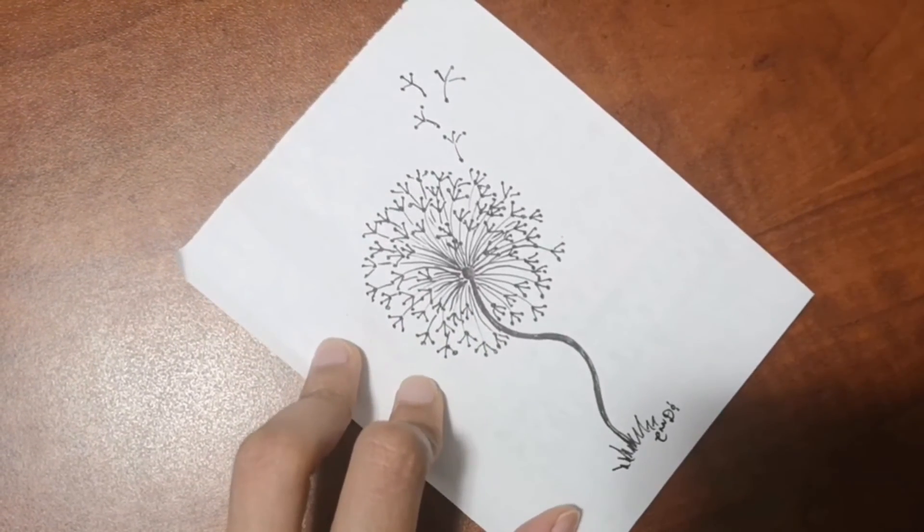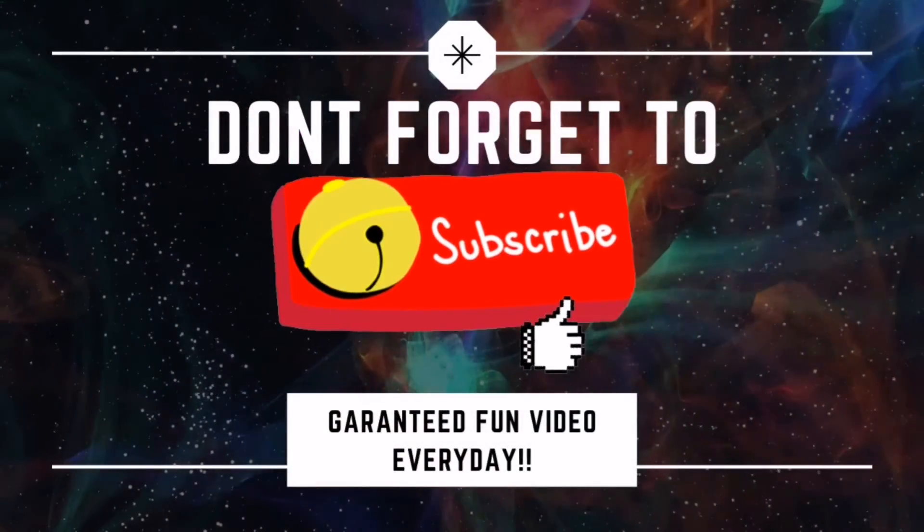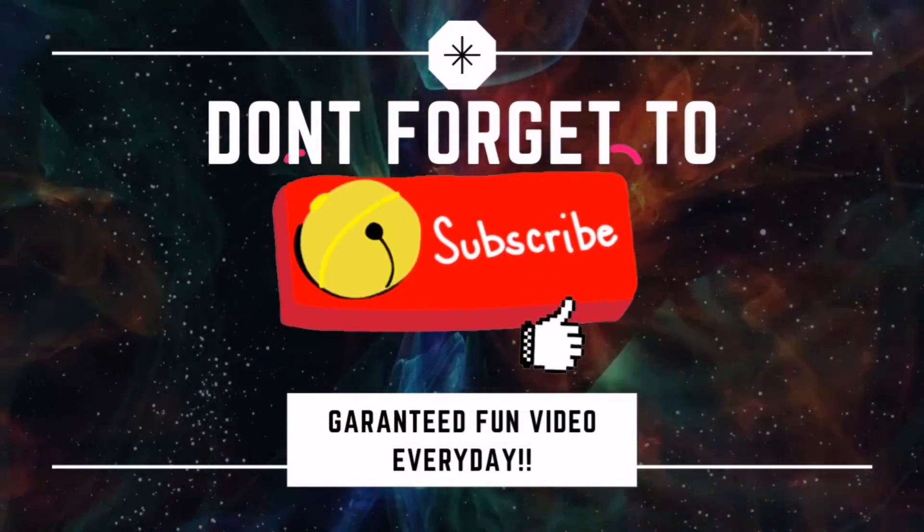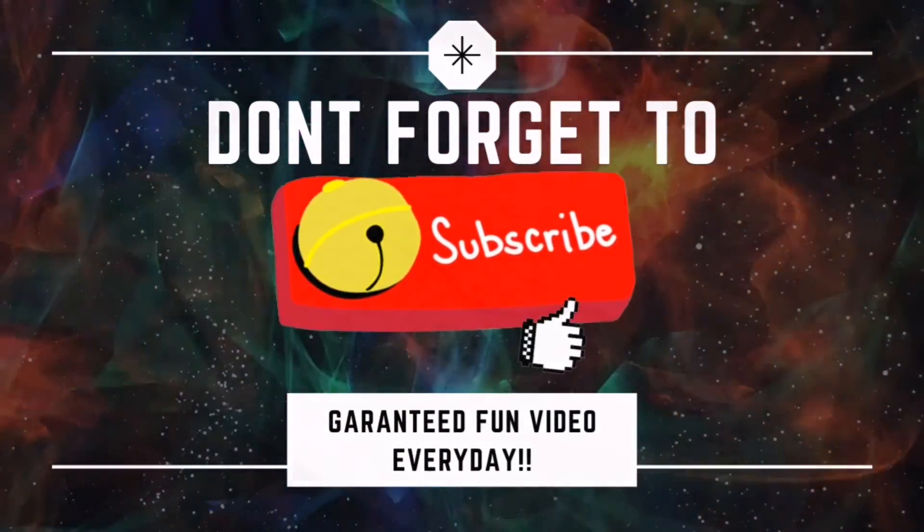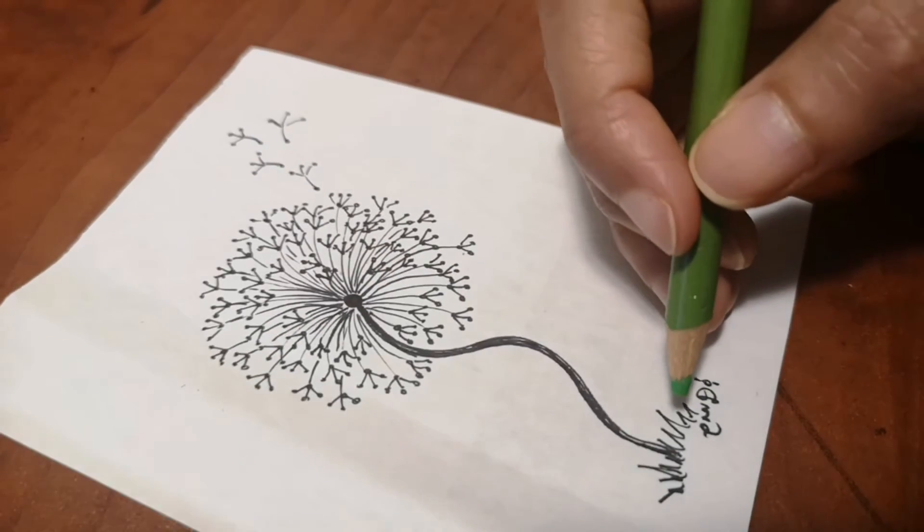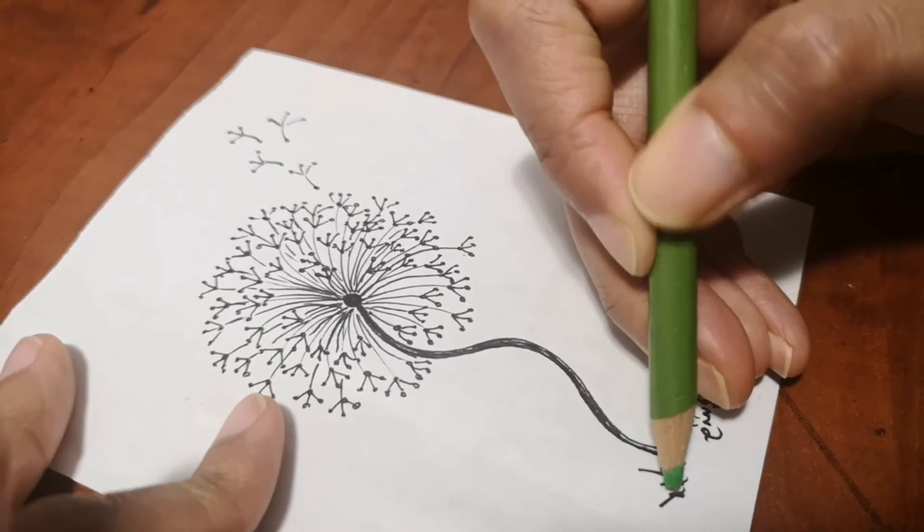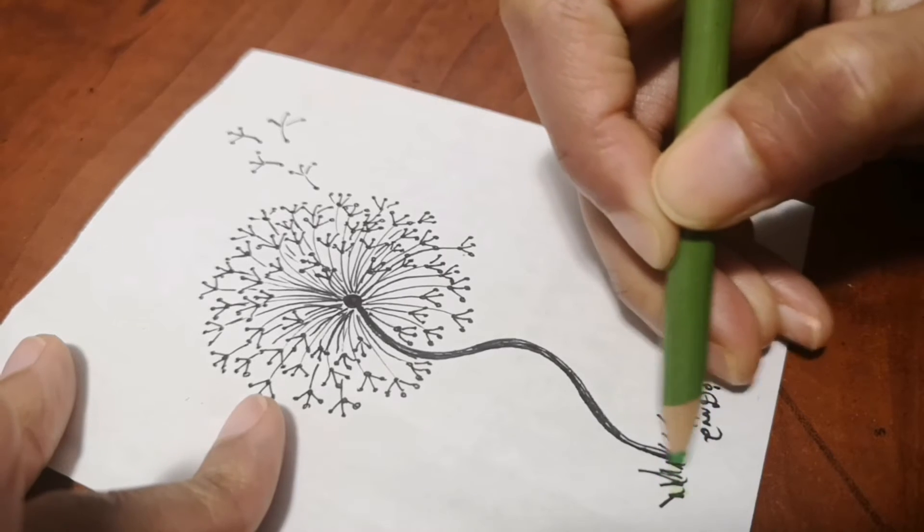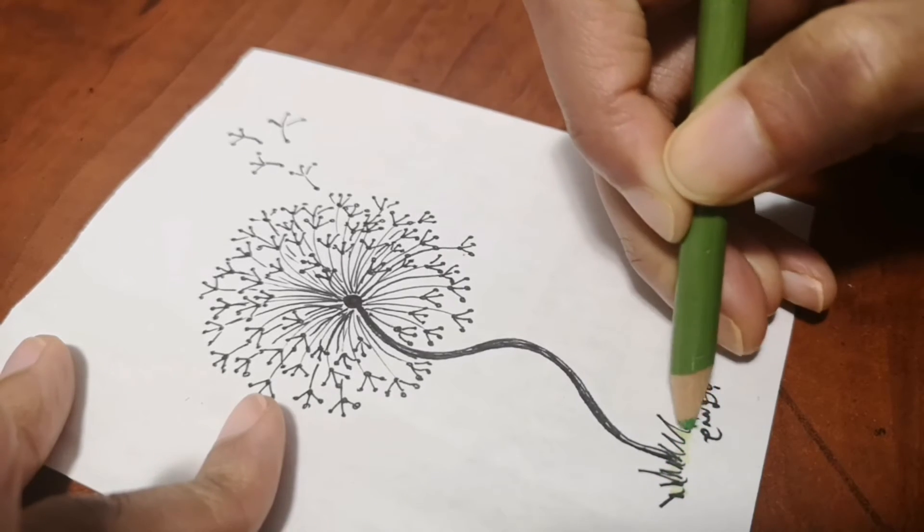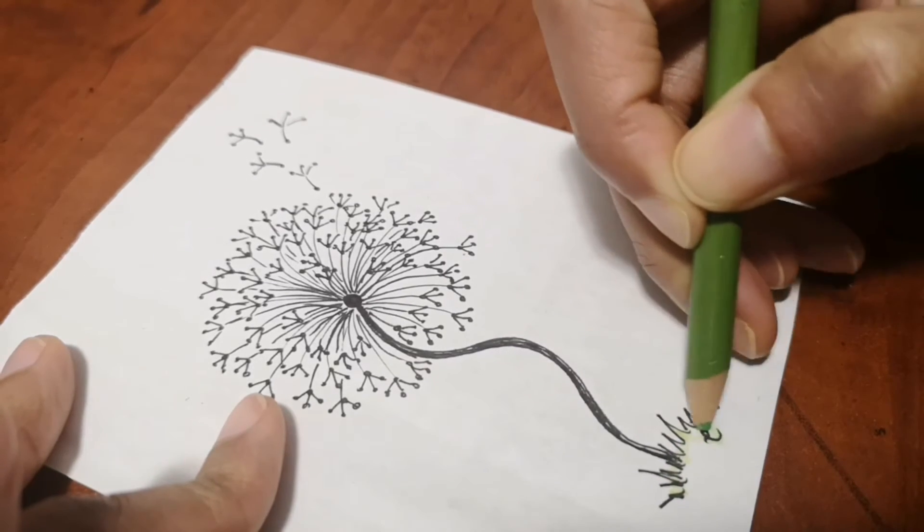If you are new to my channel and haven't subscribed already, please do so by clicking the subscribe button down below and the bell icon so you can get videos right when I release them. I'm just going to color the grass green here, and I will be just adding a little bit of blue here and there for the ball part as well.